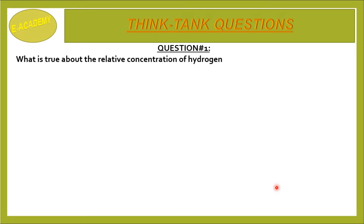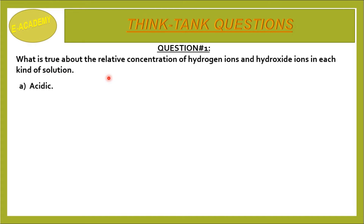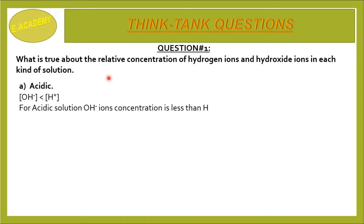Question number one: what is true about the relative concentration of hydrogen ion and hydroxide ions in each of the following kinds of solution? First is acidic. Acidic means that H+ ion concentration is more than OH- ion concentration. For acidic solution, OH- ion concentration is less than H+ ion concentration.